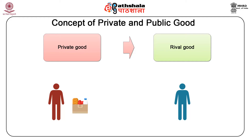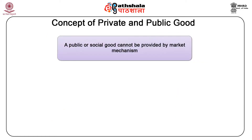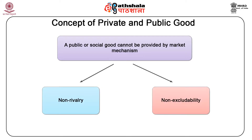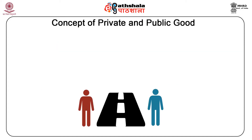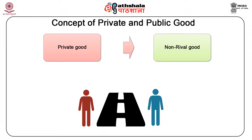Private good is also called rival or subtractable because if one person is consuming it, others cannot consume the same good simultaneously. A public or social good cannot be provided by market mechanism. The main reason for this is the non-rivalry and non-excludability of the good. By definition, a public good is non-rival because even if one person is consuming it, the consumption does not affect the availability of the good for anyone else.